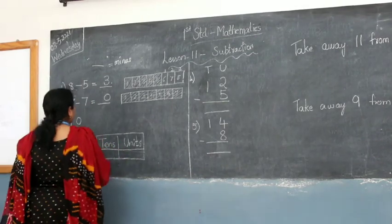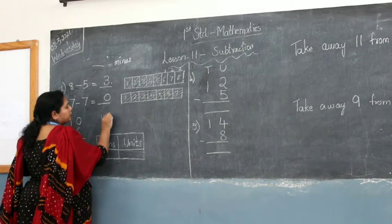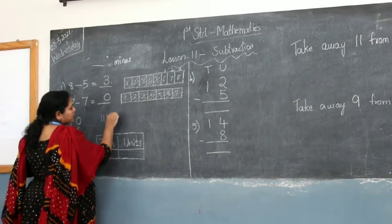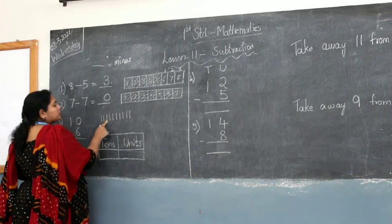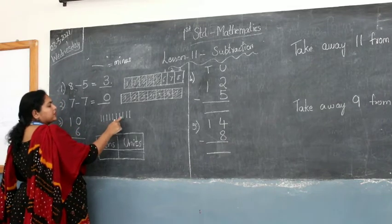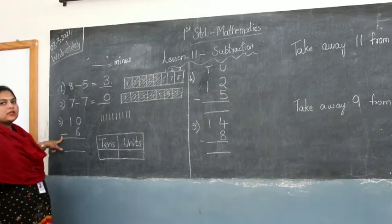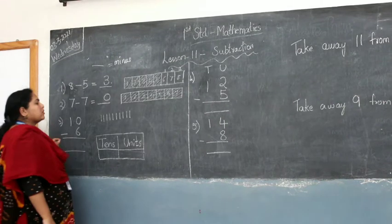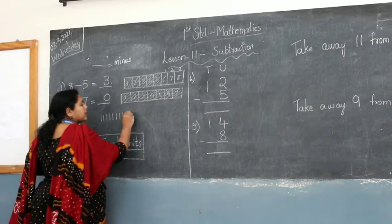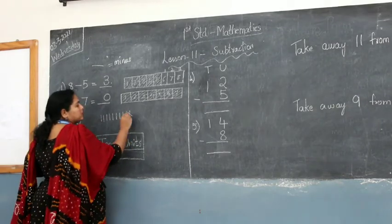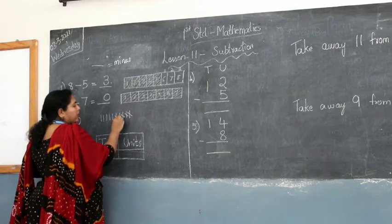So I have 10, so I am drawing 10 lines: 1, 2, 3, 4, 5, 6, 7, 8, 9, 10. I have to minus 6, so I will take away 6 — that is cancelling: 1, 2, 3, 4, 5, 6. I cancelled 6 lines.